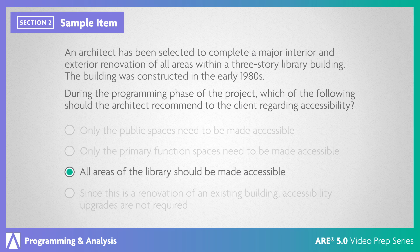The correct answer is that all areas of the library should be made accessible. The ADA Standards for Accessible Design requires all altered elements and spaces within a renovation project to comply with the accessibility standards. Since this is a major renovation of all areas within the building, the architect should recommend that all areas of the library be made accessible. This is a UA level item requiring you to identify accessibility requirements that are applicable to a renovation project.